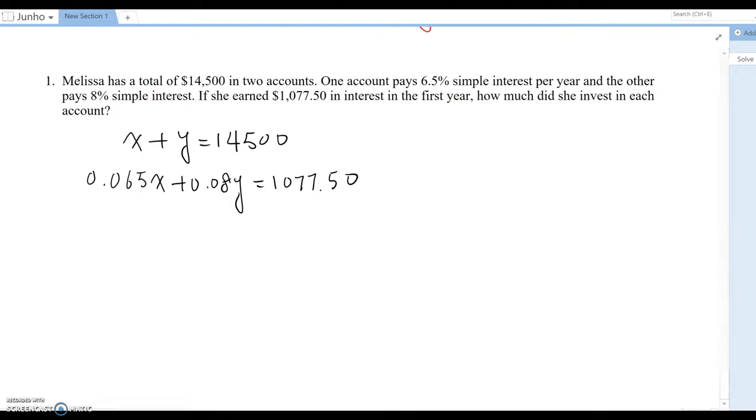So same way, I'm going to solve one variable from here, always for Y. I usually do for Y, then Y equal to 14,500 minus X. Then do you remember the next step?